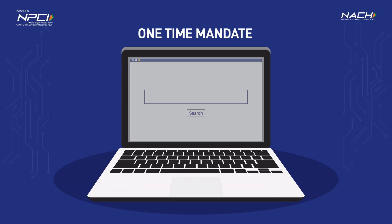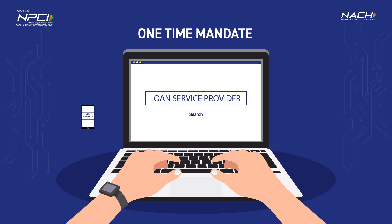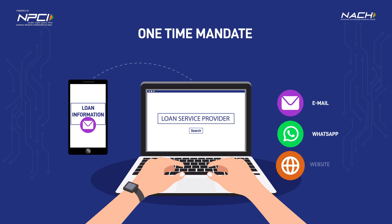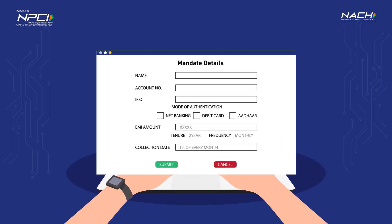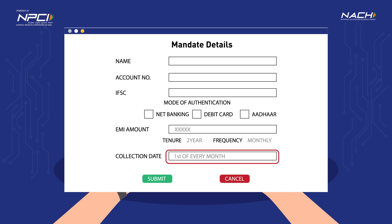In order to obtain a loan, Mr. Dave connects with a loan service provider who will then start a one-time mandate registration and communicate the loan information to Mr. Dave via his mobile phone or other communication channels like email, WhatsApp, or the lending company's web portal. Mr. Dave will open the mandate information and check the pre-populated details such as EMI amount, collection date, tenure, and other details.